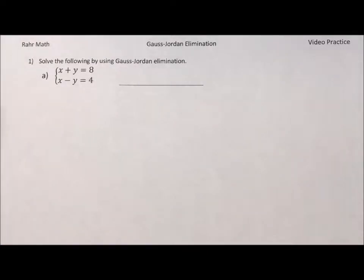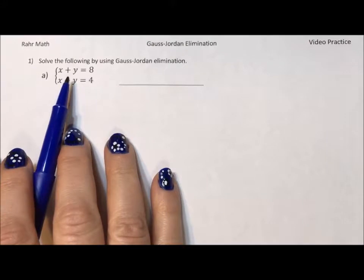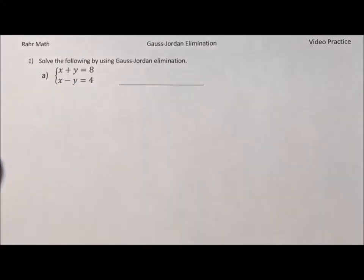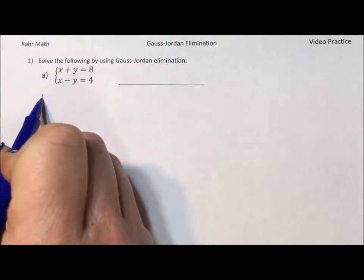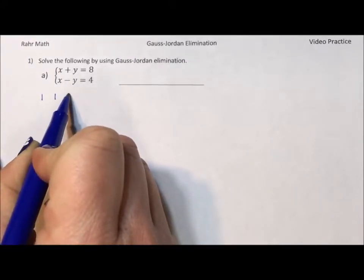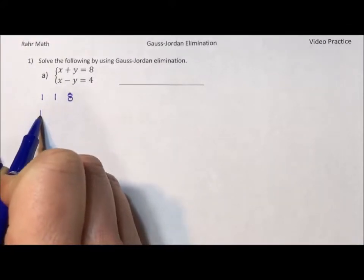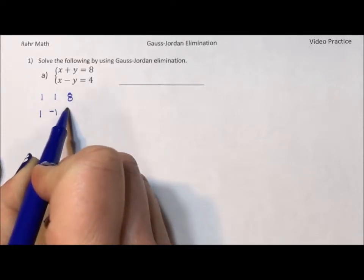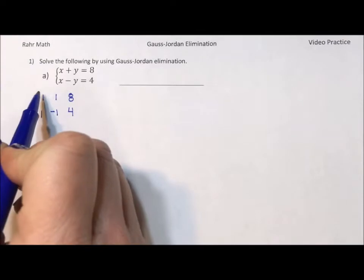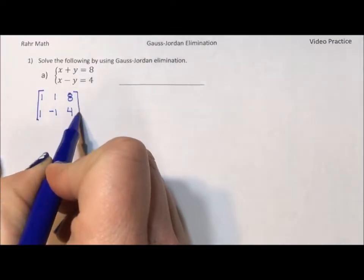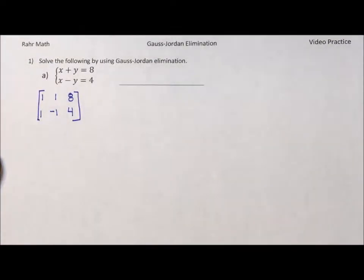So here I have a pretty simple system of equations and the first thing I want to do is write it as a matrix. To do that I'm going to write the coefficients, the numbers for the variables and our constant number without any of the other math symbols. So I'm going to put 1x plus 1y equals 8, 1x minus 1y equals 4.